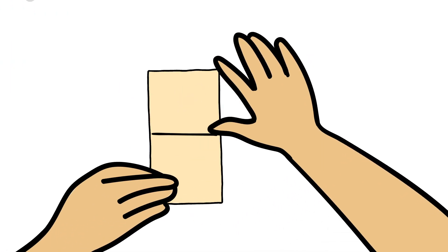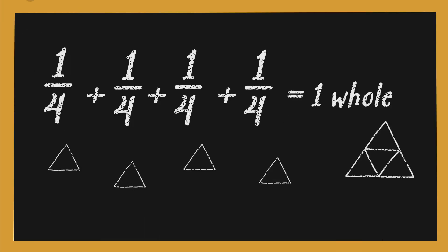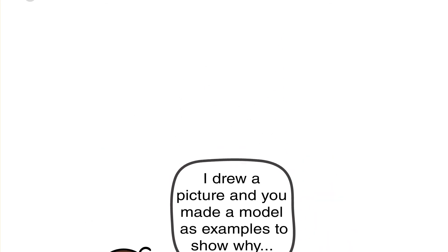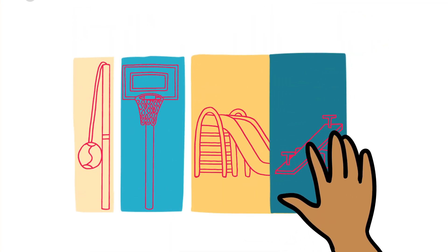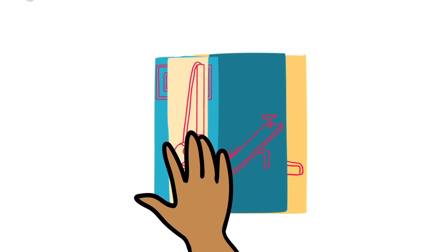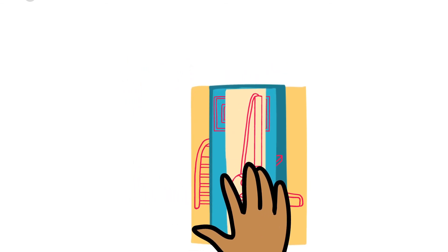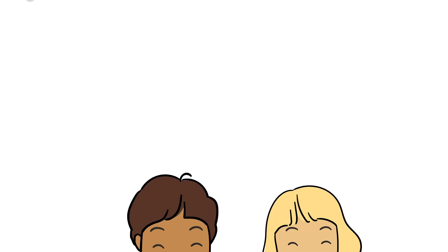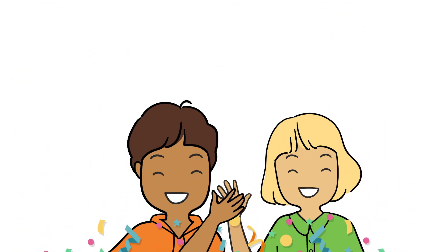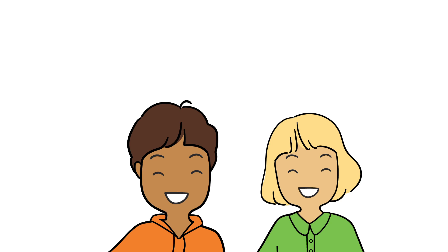Remember, mathematicians prove their thinking by using examples and evidence, listening carefully to what others have to say without interrupting, rephrasing what they have heard, sharing whether they agree or disagree, and using evidence to support their arguments. Now it's your turn to solve problems together by constructing and critiquing arguments.